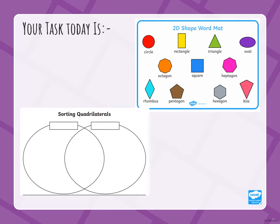Okay, this is your task today. In your Google Classroom there will be a 2D shape word map. You can either use that as a guide or print it out and cut out the shapes, but you don't have to. You can just draw the shapes onto the Venn diagram. We're going to sort the quadrilaterals using one side of the Venn diagram, and then choose what we want in the middle — things they have in common — or just do two sides.